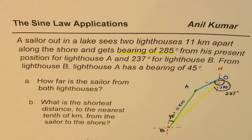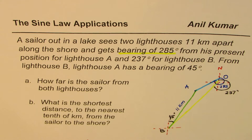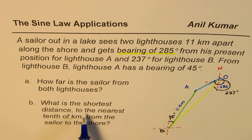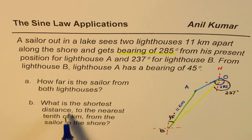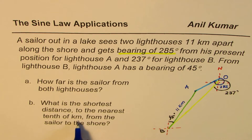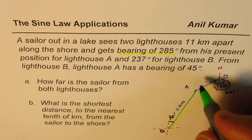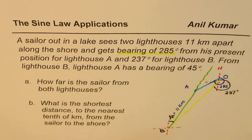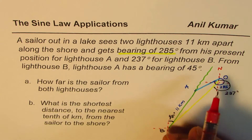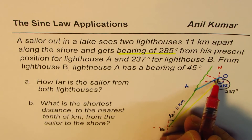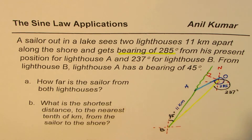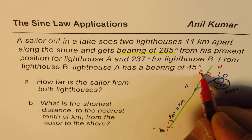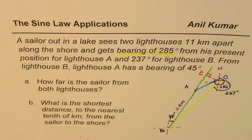It's simple application of sine law. Once you get the right figure, it should not be difficult. Also, the second part asks: what is the shortest distance to the nearest tenth of a kilometer from the sailor to the shore? The shore is a straight line, and the shortest distance from point O should make a 90-degree angle with it. So we also need to find point C.